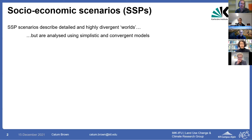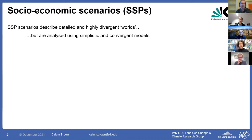Many of you are familiar with the SSPs — socio-economic scenarios describing global and often local regional socio-economic conditions into the future. These are often very detailed and describe very different worlds in the future, but we tend to analyze them with relatively simplistic and convergent models. By that I mean the models often don't include many of the socio-economic factors that actually define the scenarios and make them different from one another.